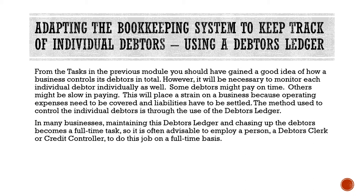From the task in the previous module you should have gained a good idea of how a business controls its debtors in total. However, it will be necessary to monitor each individual debtor as well — some debtors might pay on time, others might be slow in paying. This places a strain on the business because operating expenses need to be covered and liabilities have to be settled. In many businesses, maintaining the debtors ledger becomes a full-time task, so it is often advisable to employ a debtors clerk or credit controller.